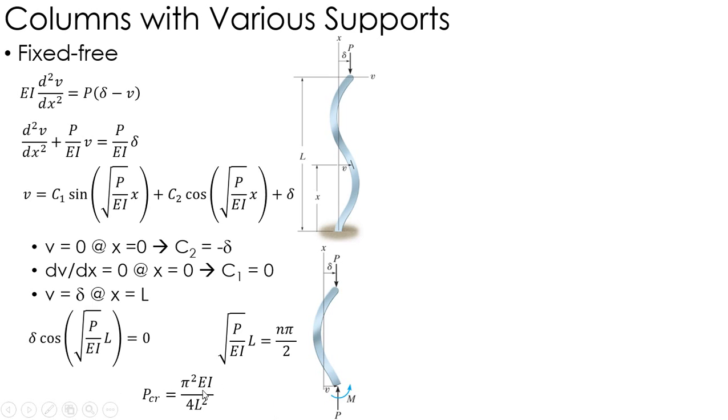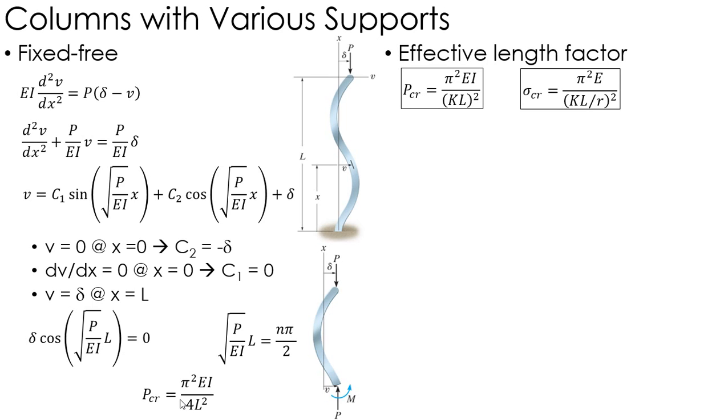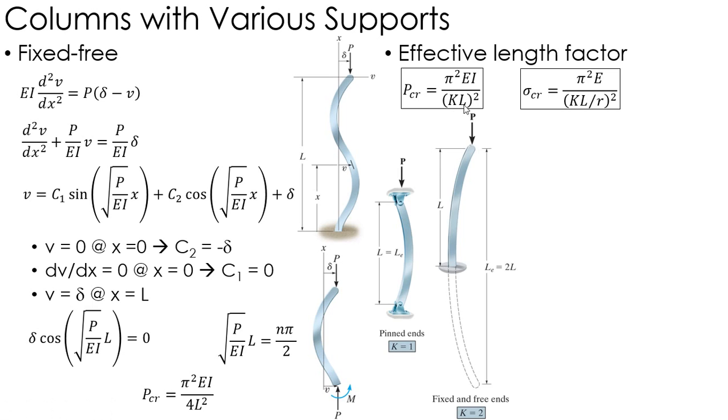What we actually do is we use what's called an effective length factor, where P critical is everything's the same; it's just I have some factor K times the length. So for a pin-pin, that K is one and I just have L squared.